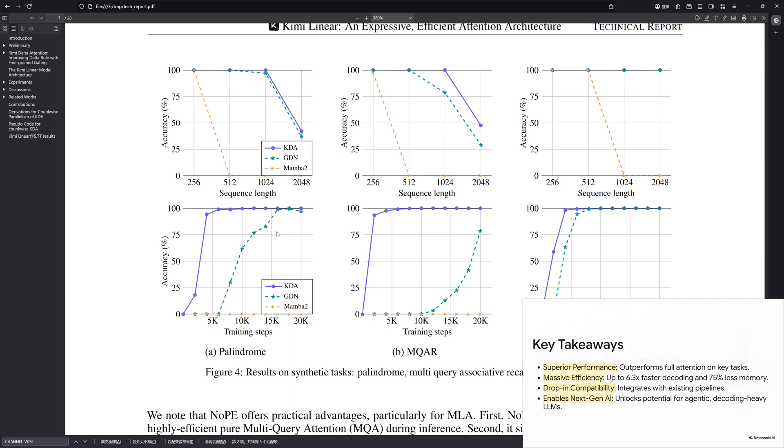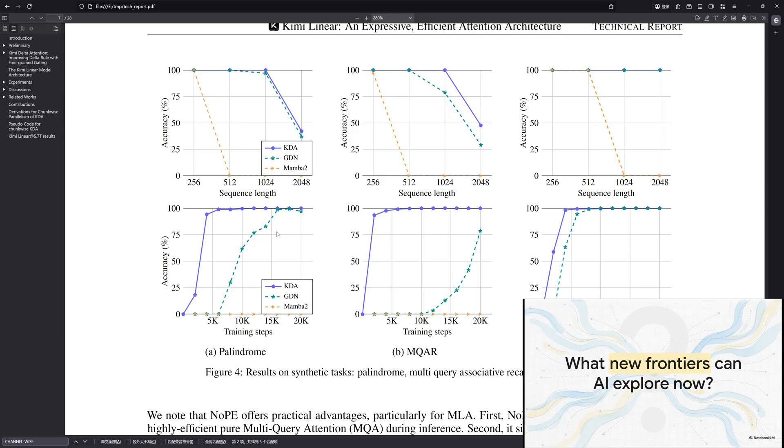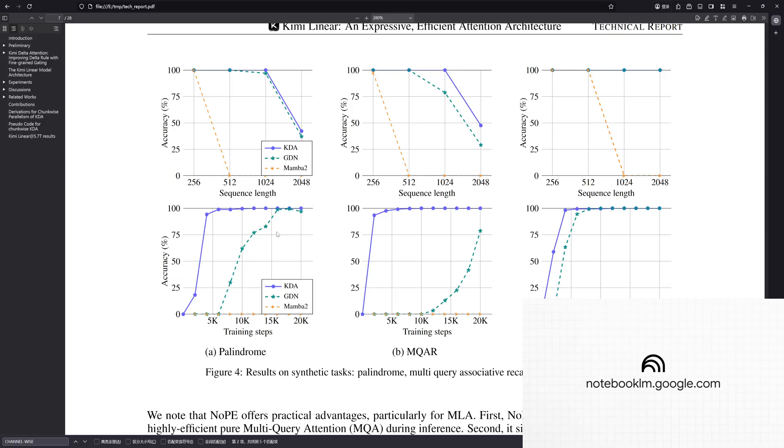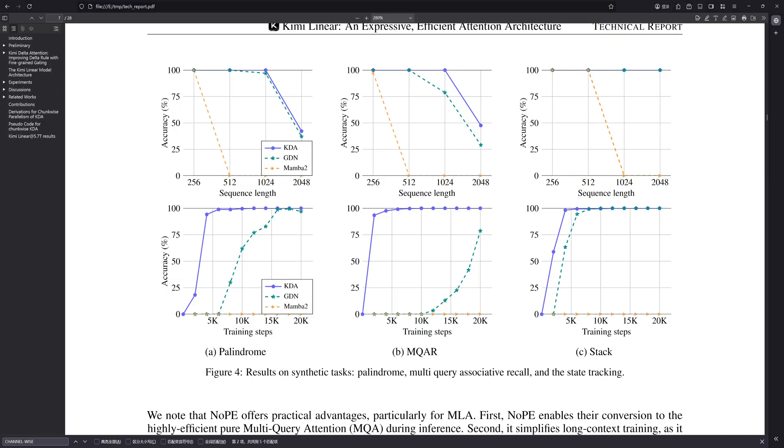And that really brings us to our final thought-provoking question. For years, this quadratic scaling problem has been a hard wall, a real limit on what we could even dream of building. Now, that wall has been smashed. So the question is, what's on the other side? What new frontiers can AI finally begin to explore?